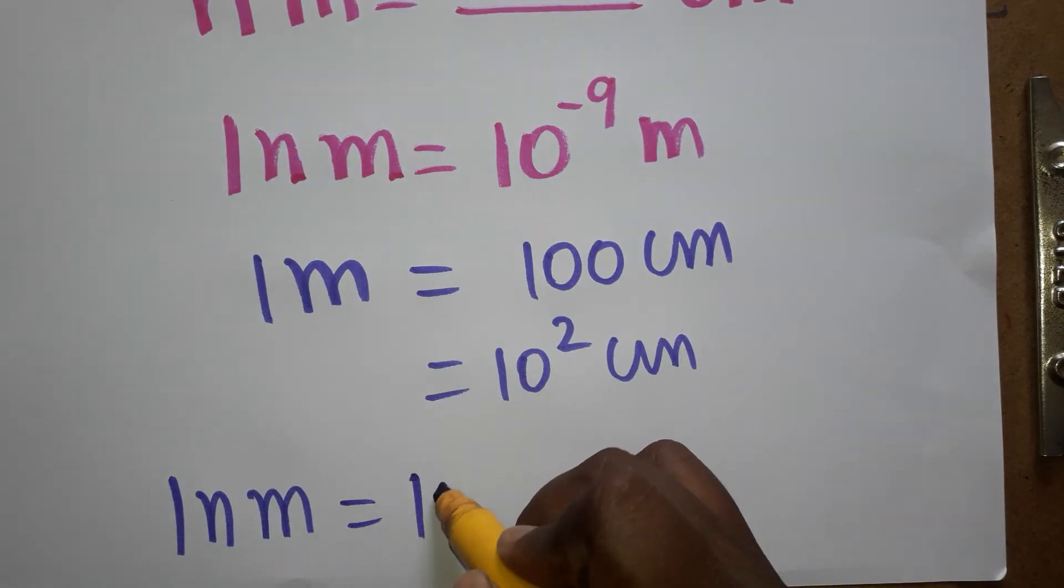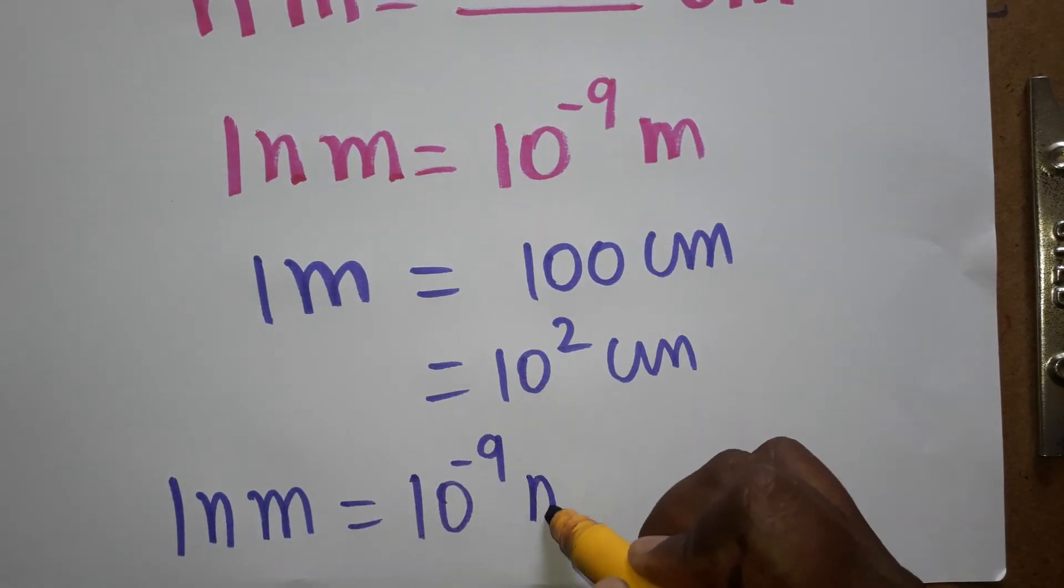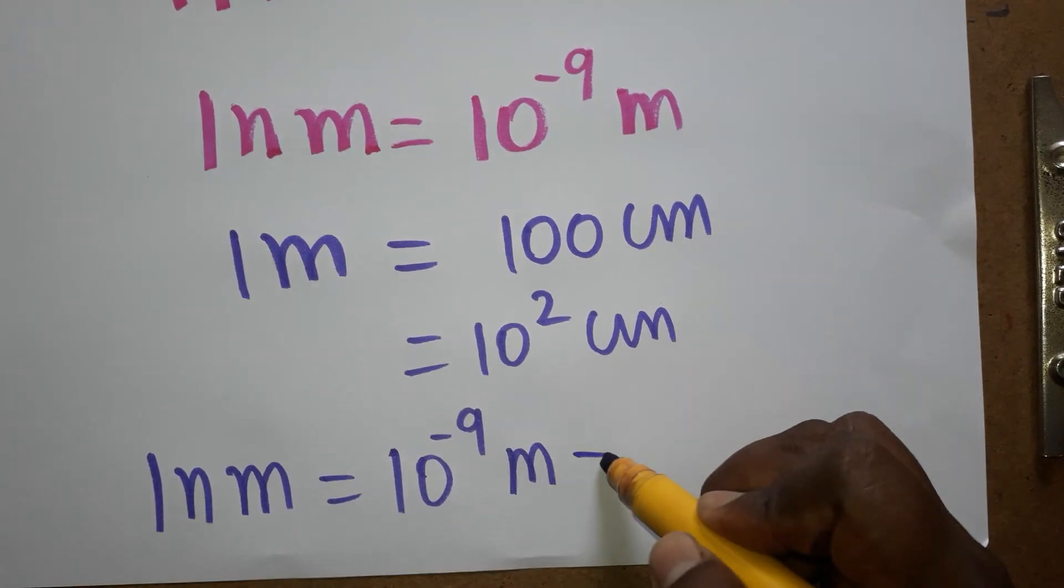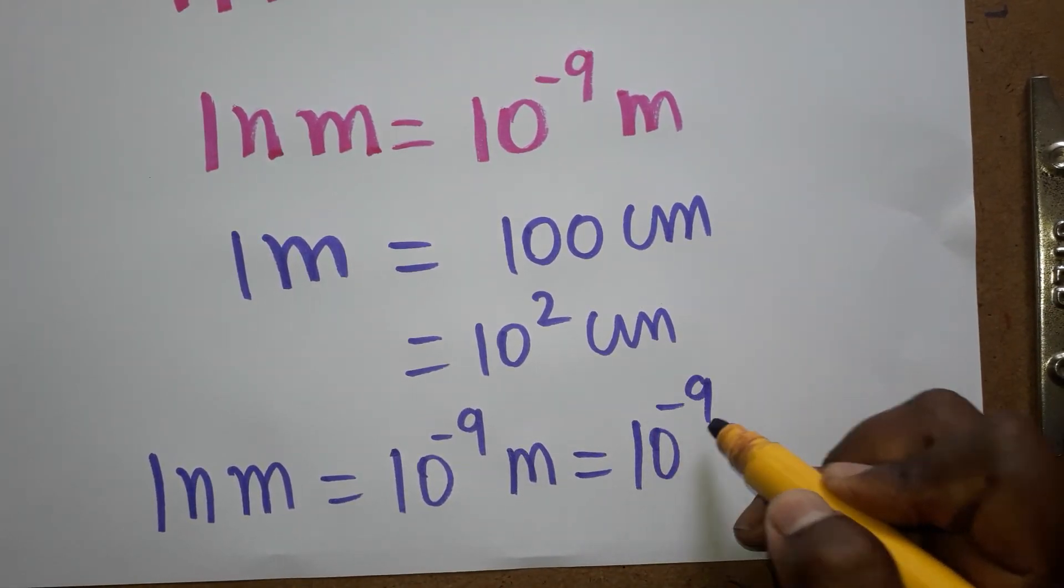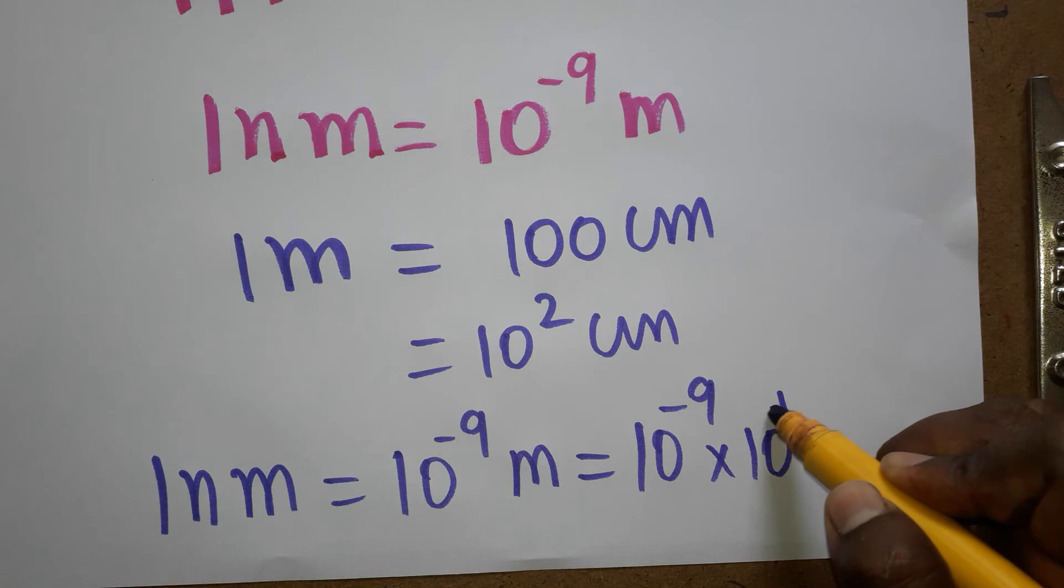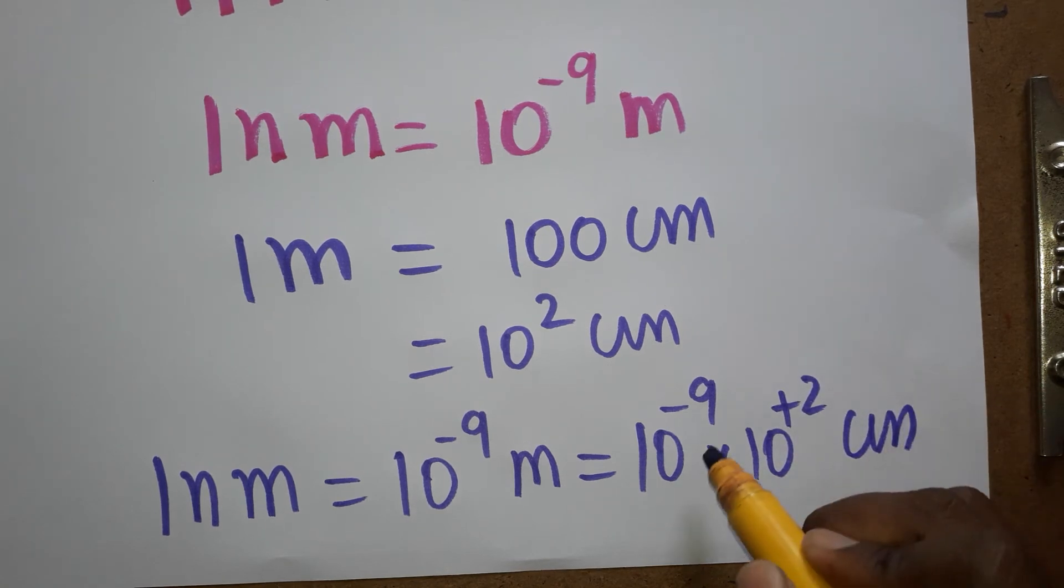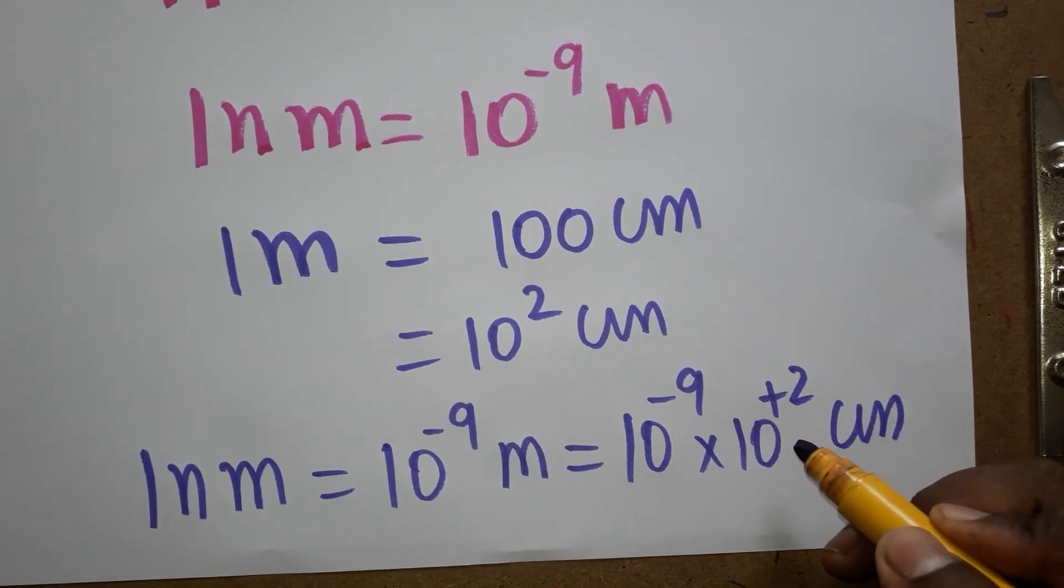One nanometer is 10 power minus 9 meter. One meter is 10 power 2 centimeter. So, 10 power minus 9 into 10 power plus 2 centimeter. Minus 9 plus 2 will get us minus 7.